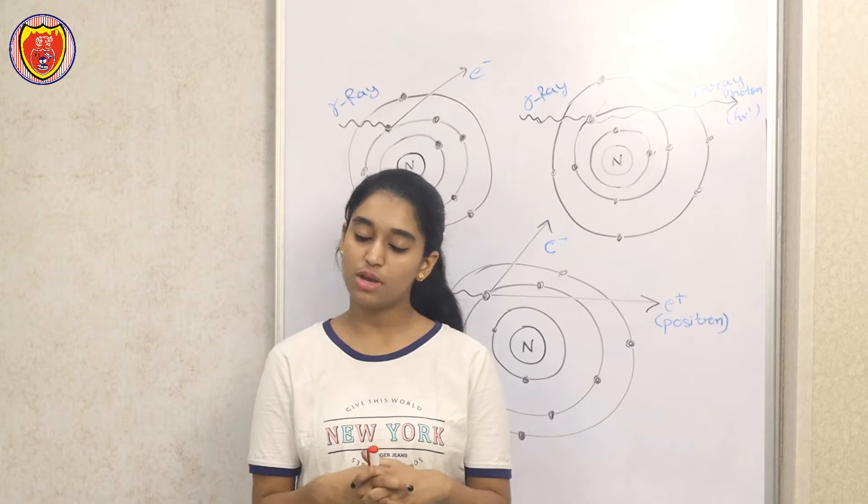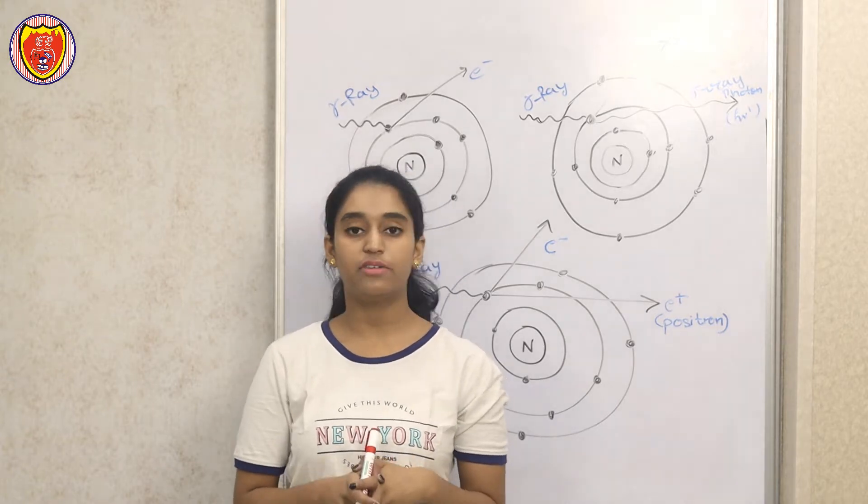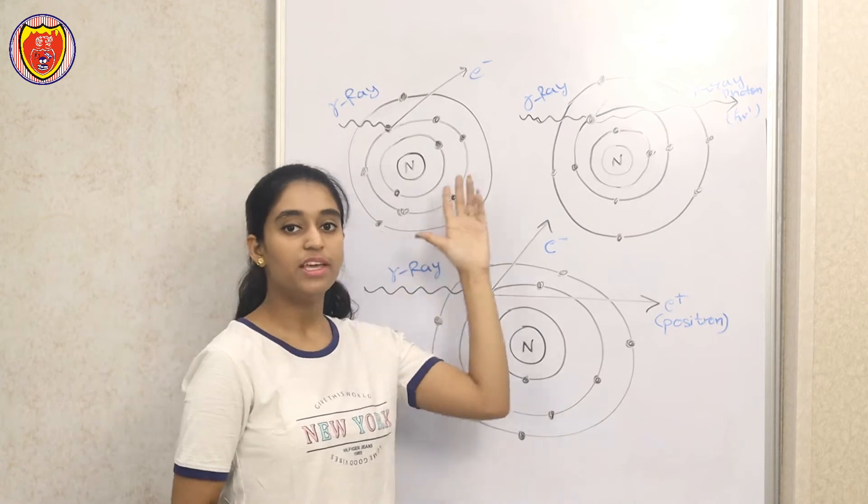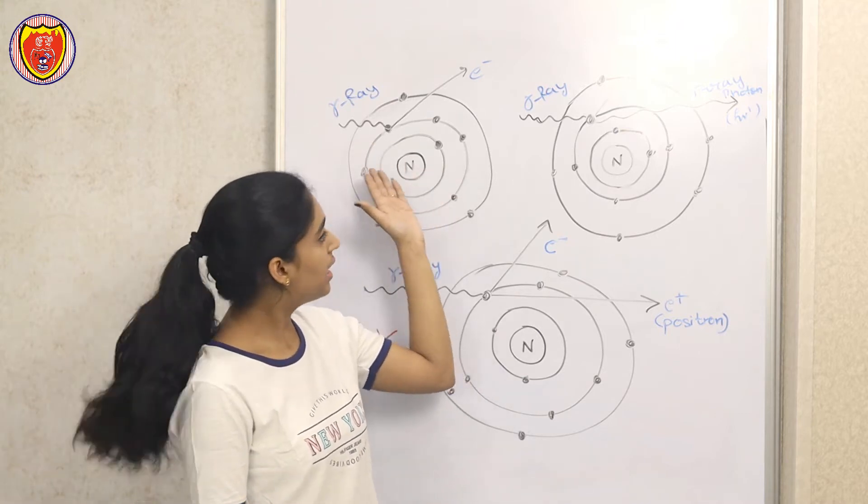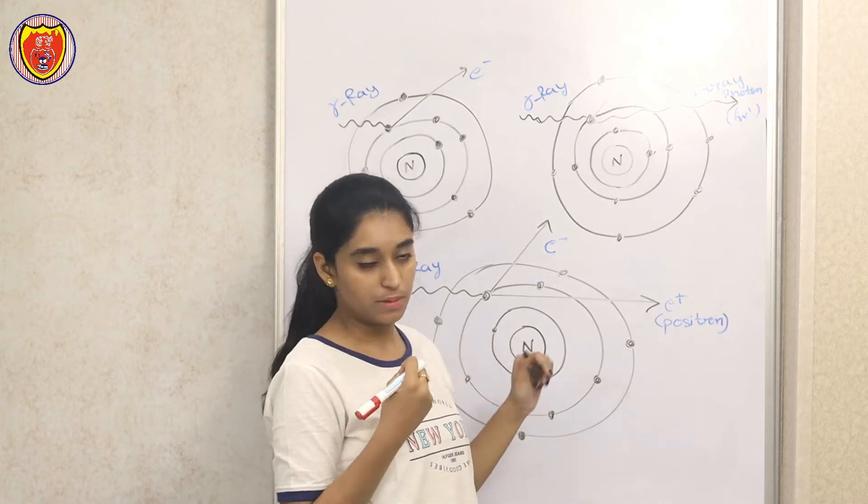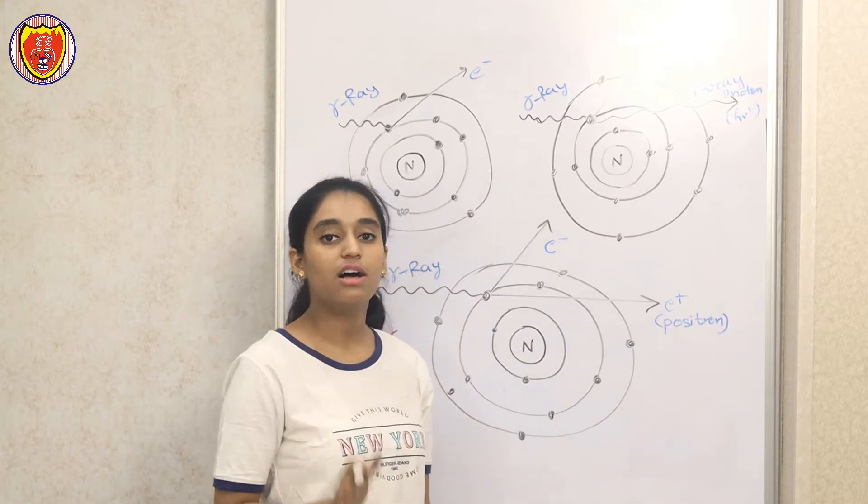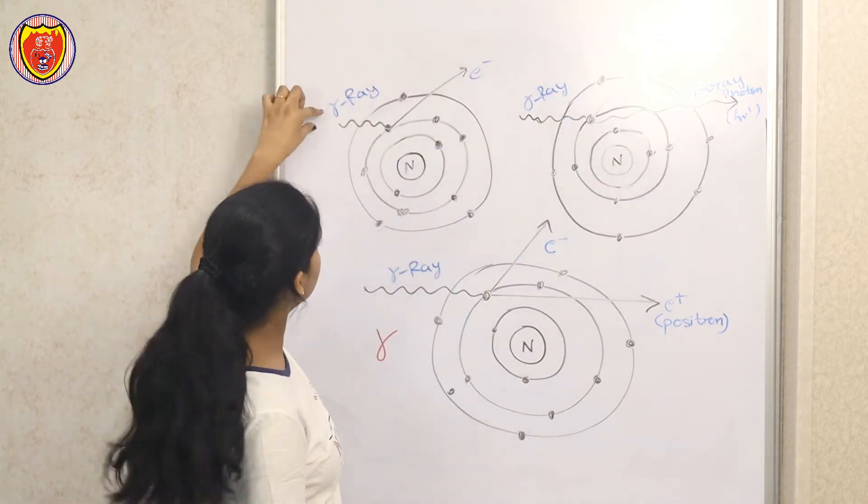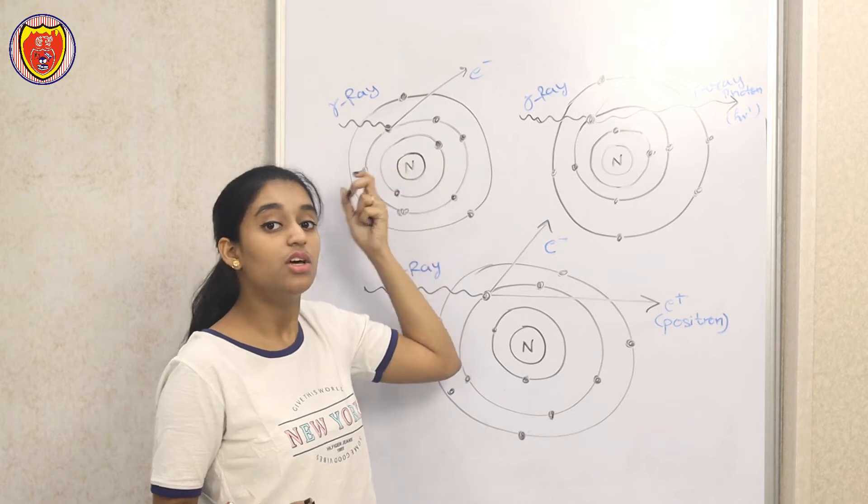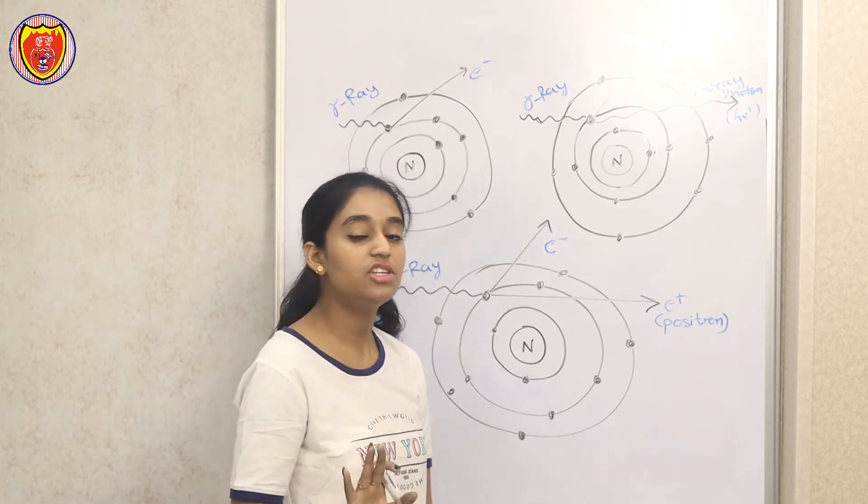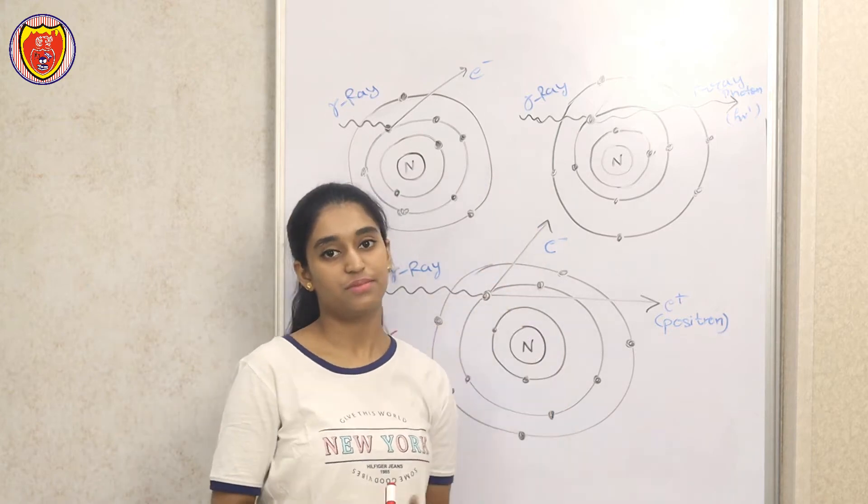If you need a detailed video on these topics, please comment. I will make detailed videos on these three topics. First of all, let's talk about photoelectric absorption. When gamma rays hit an atom, it will absorb the gamma ray. When it is absorbed, the atom will get excited. Then what happens?